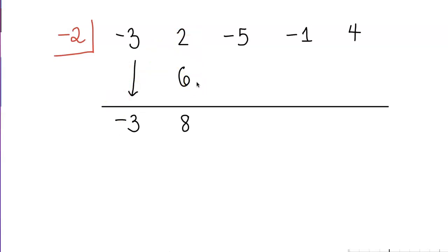Now we multiply again. Negative 2 times positive 8 is negative 16. Add these two numbers: negative 5 plus negative 16 is negative 21. Once the number is down, we multiply again. Negative 2 times negative 21 is positive 42. Adding these two numbers gives positive 41.